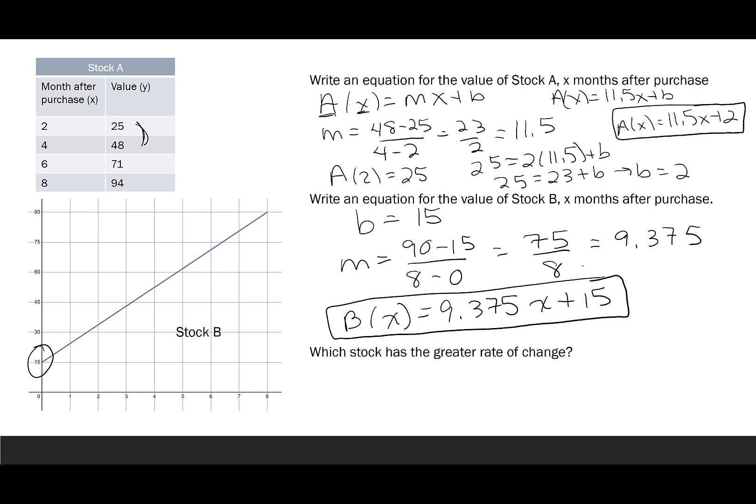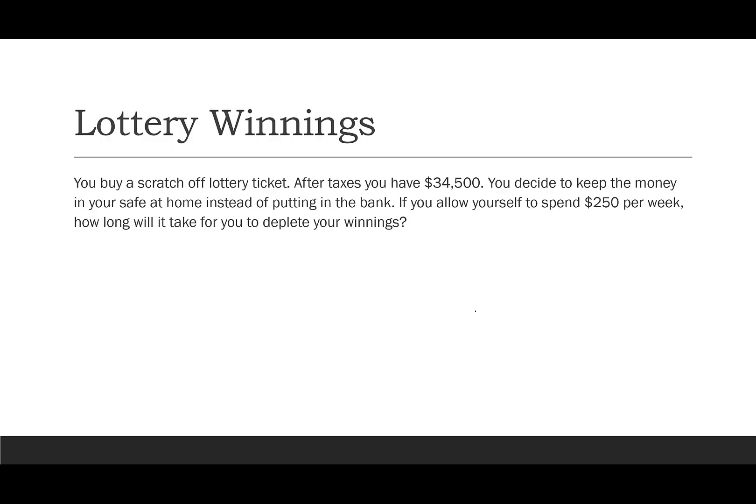So let's say we call this B(x) to say stock B. It's 9.375 times x plus 15. So I can see how is it changing and where did it start. At the end the question is which stock has a greater rate of change and that would be A. A is changing at 11.5 dollars a month versus B is changing at 9.375. But look at what we had to do to get there. So we really do want to evaluate it and not just eyeball it to decide what the answer.